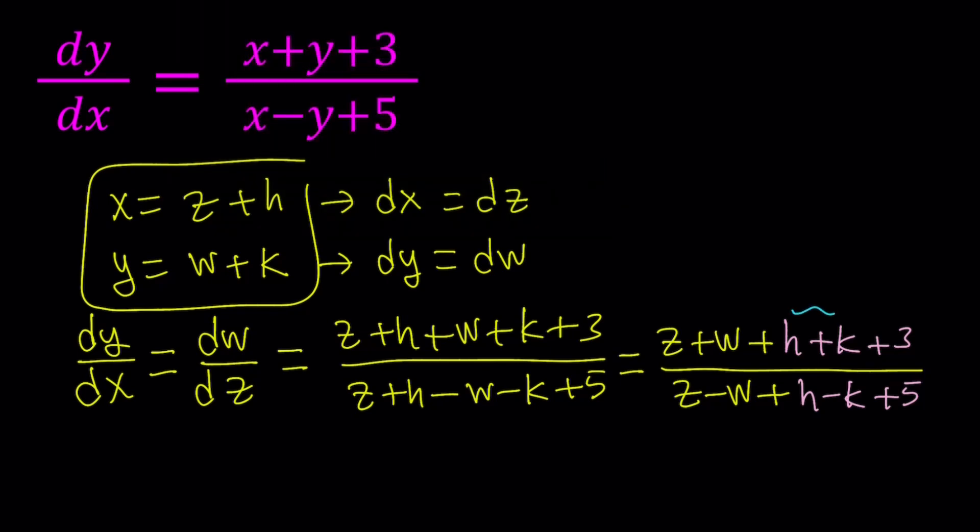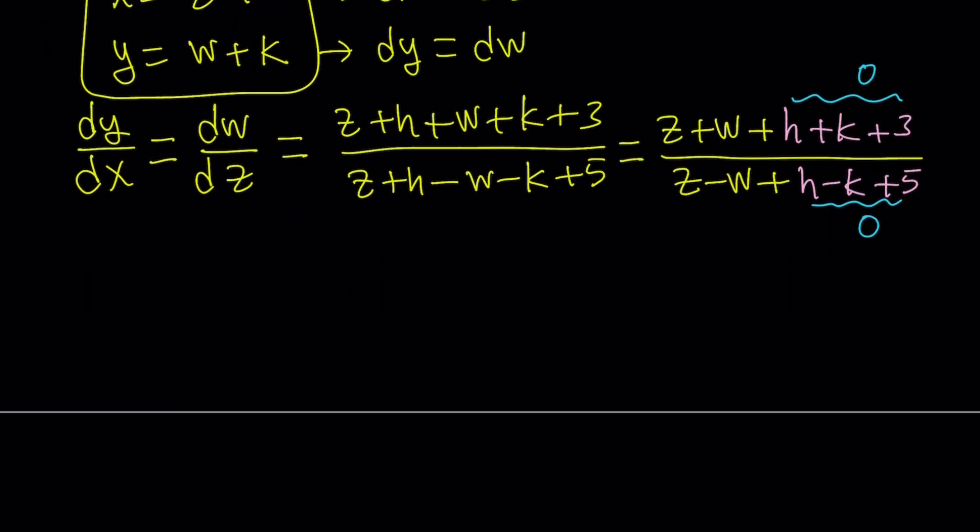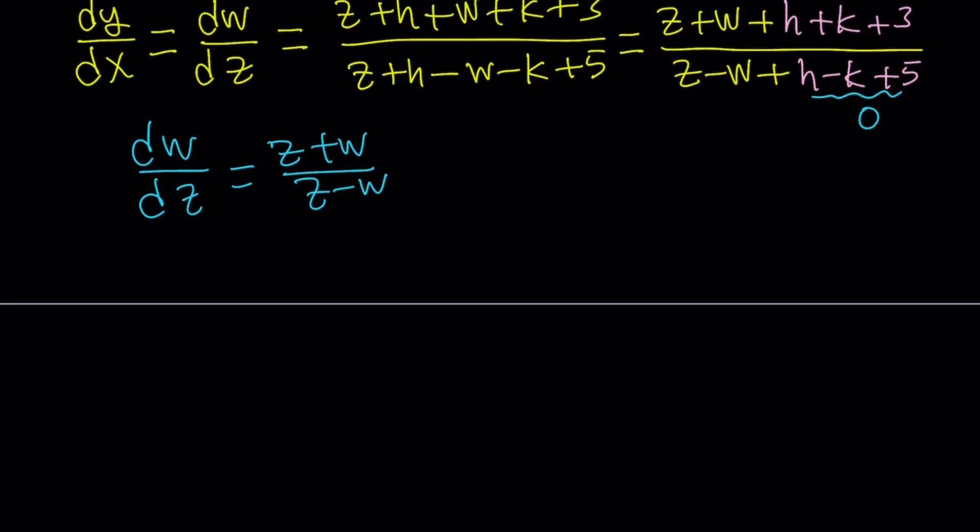So, why don't we just make it homogeneous by taking these values to be 0. So, I want this to be 0 and I want this to be, and those are constants, I want that constant to be 0, so that we can get something much simpler. Let's forget about y and x for now. And let's just write our expression as dw over dz equals z plus w divided by z minus w. So, this is the equation we're going to be solving.